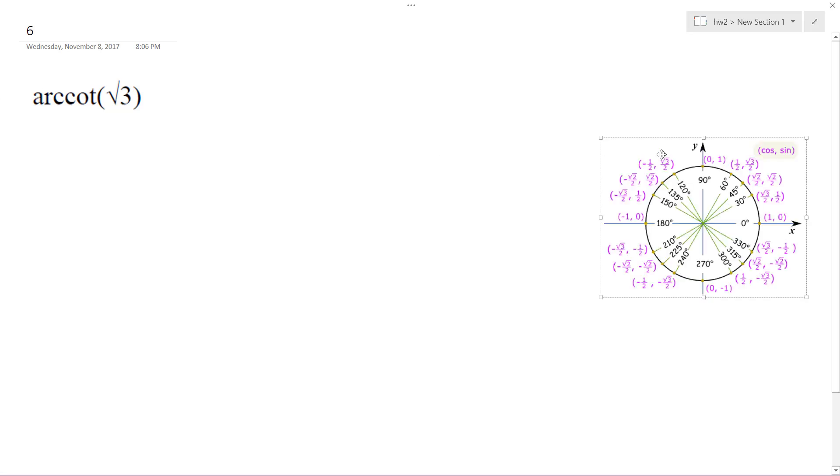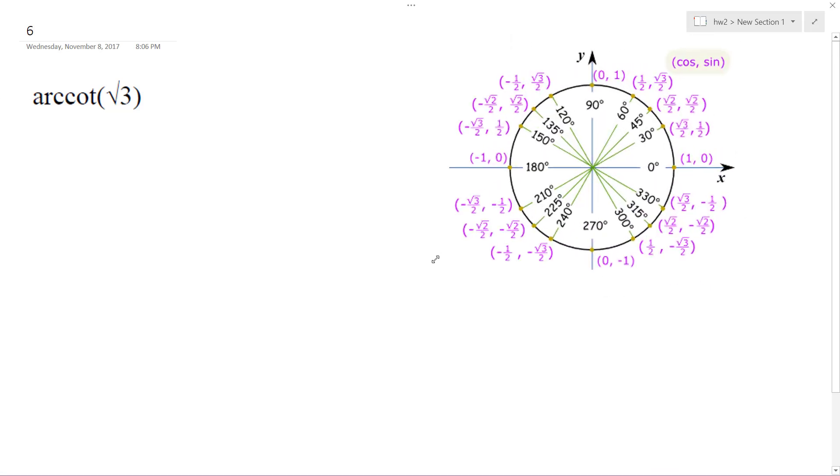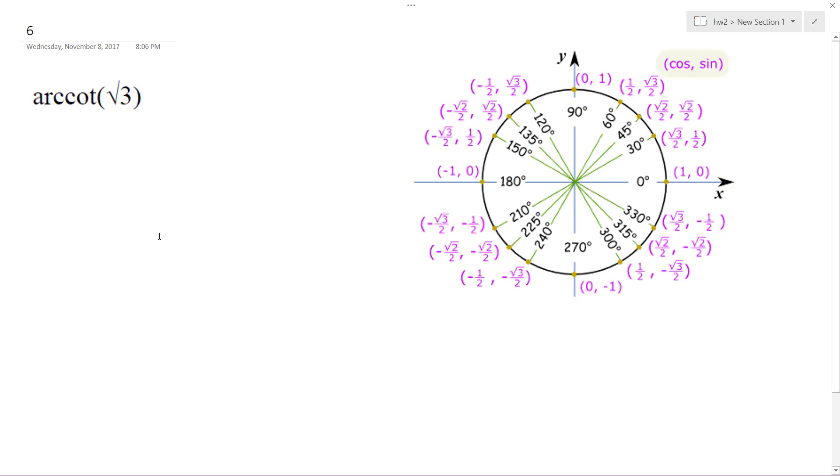This problem could be a little tricky. If you take the whole circle, there could be two solutions, but because this is an inverse arctangent, we're limited between negative pi over 2 and pi over 2.